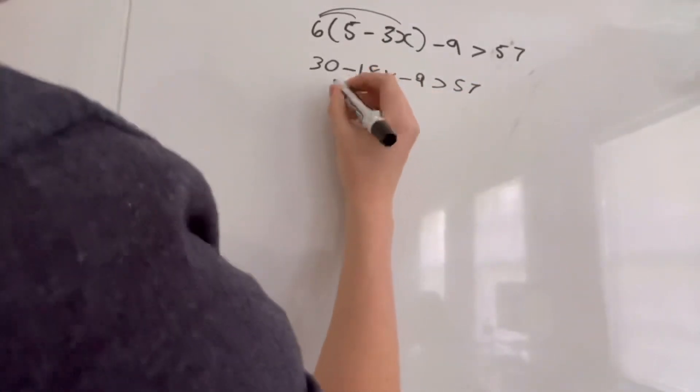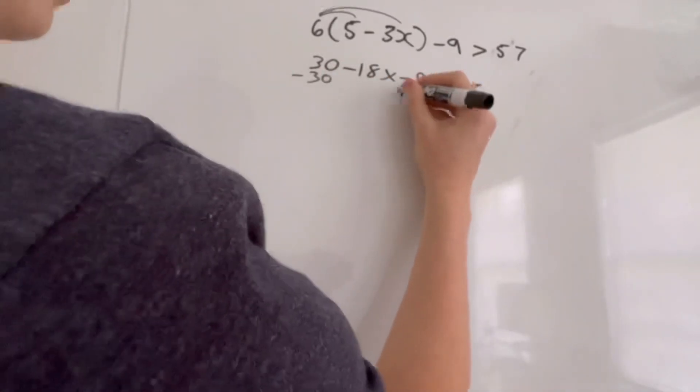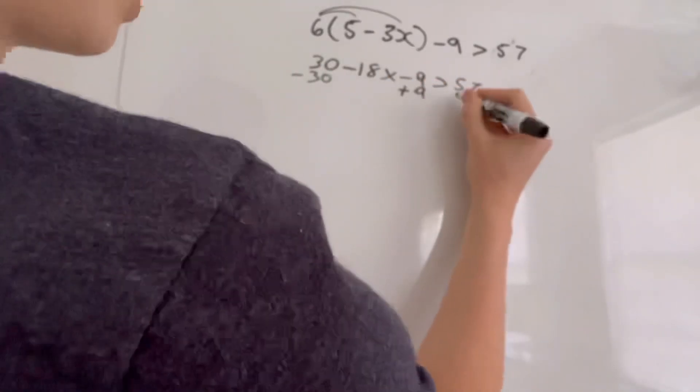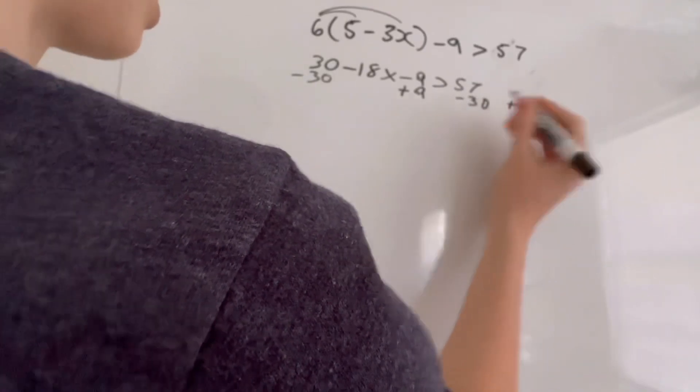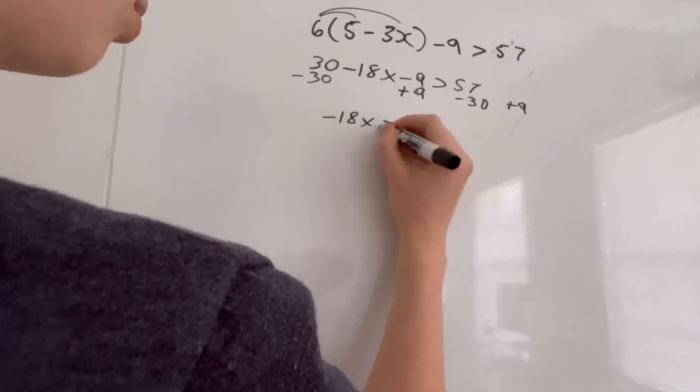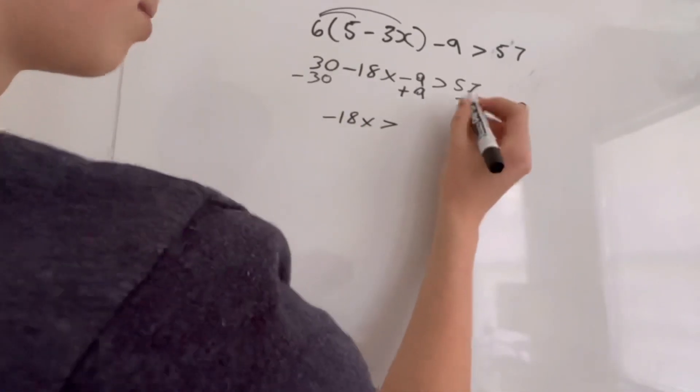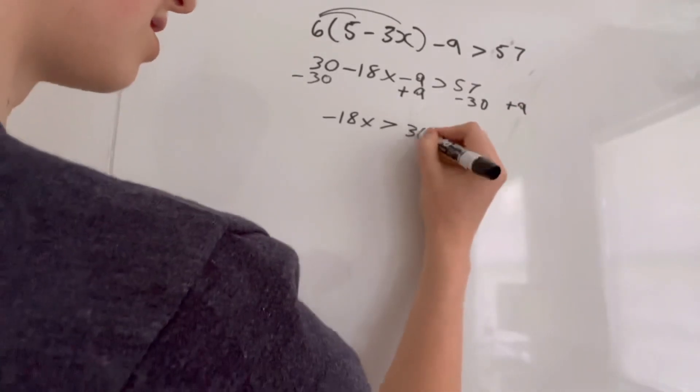So what we have to do now to isolate x is subtract 30 from both sides and also add 9 to both sides. So we are left with negative 18x is greater than 57 minus 30 is 27, and then plus 9, which is 36.